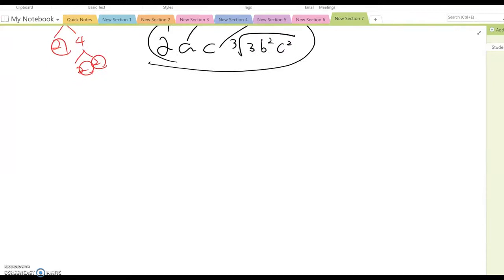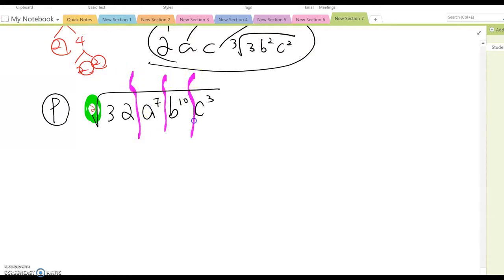Last example of this section is letter P: square root of 32 a seventh b tenth c cubed. No number here means a hidden 2 exists, which means everything paired will be one single number. Same way—I'm going to divide into number term, a term, b term, and c term.